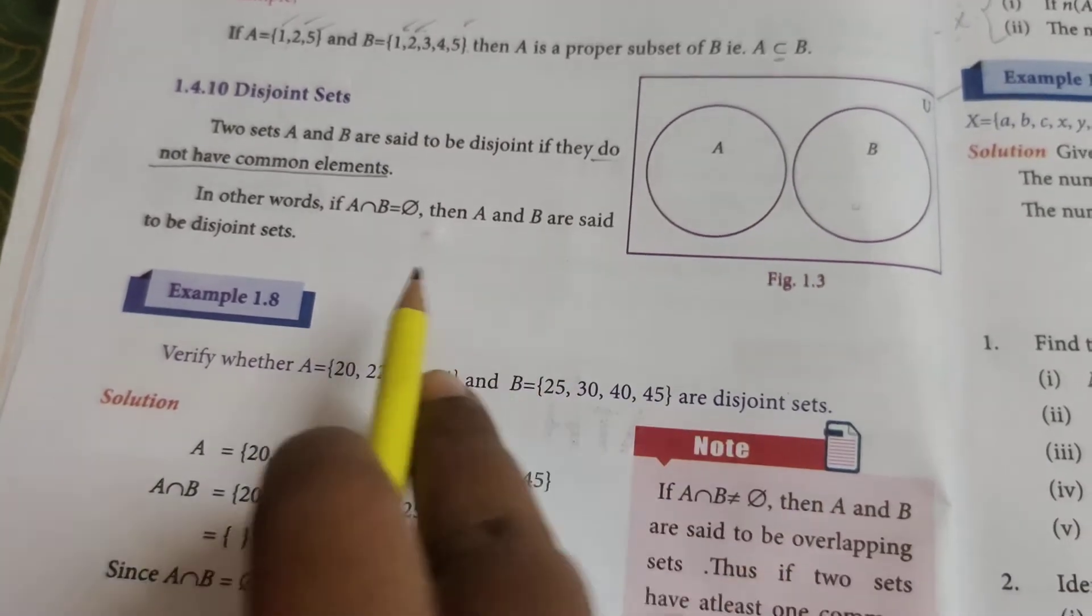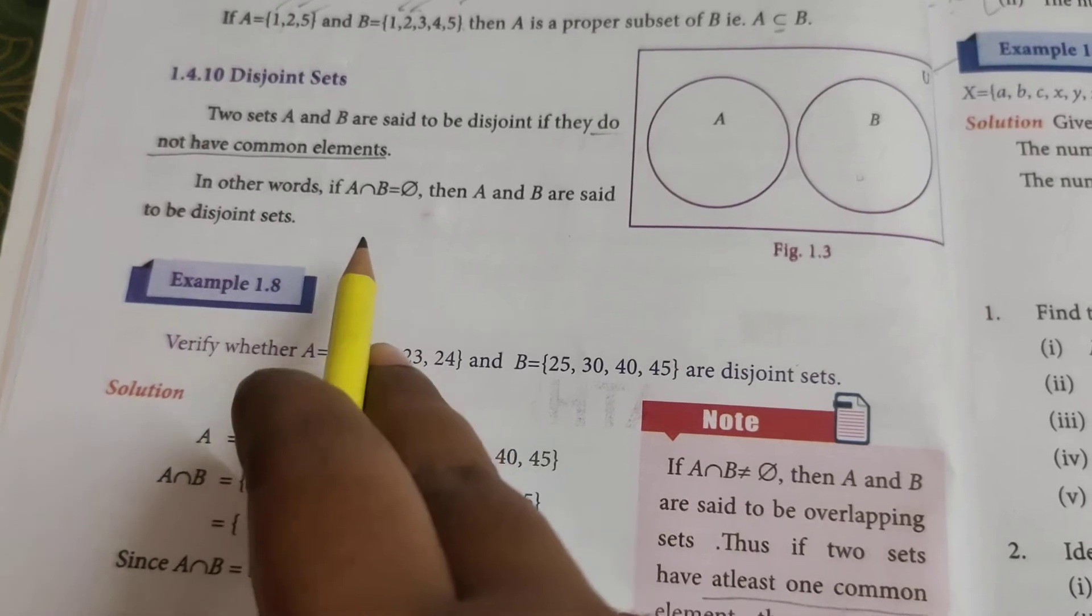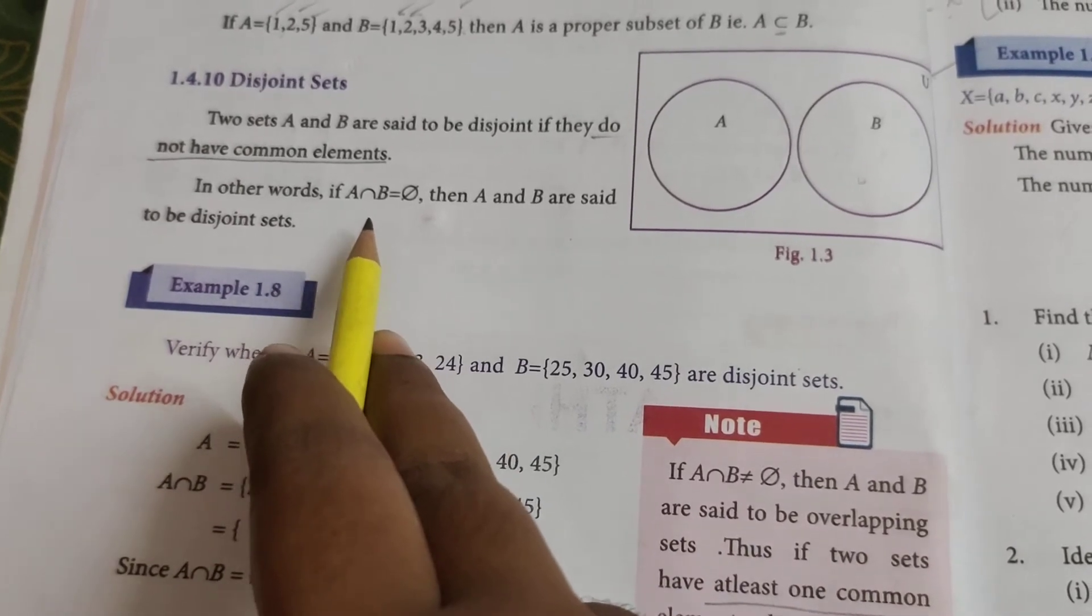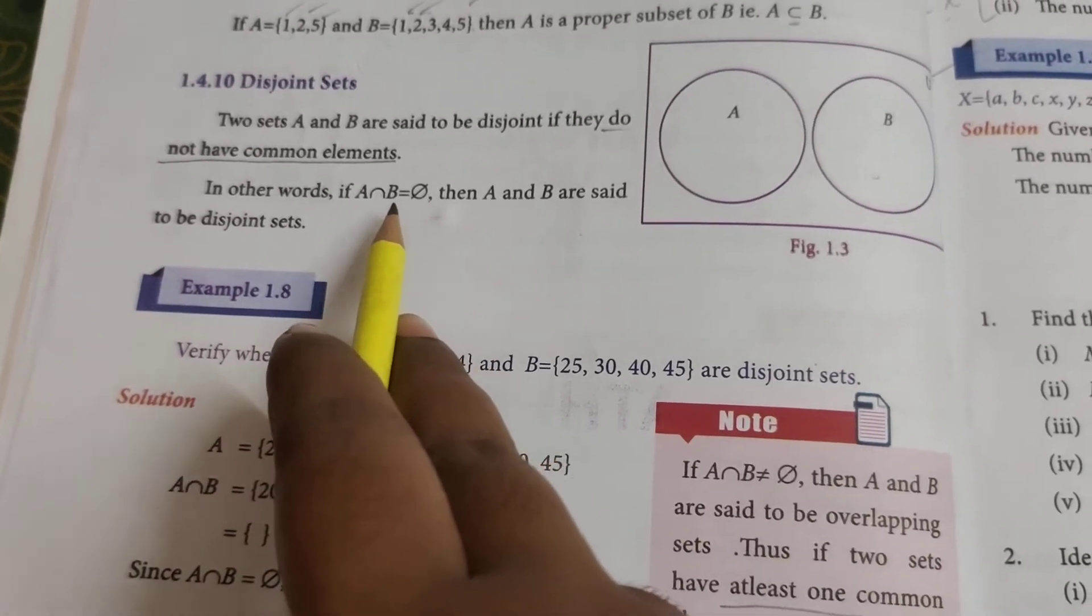If two sets like this, these two sets are called as disjoint sets. In other words, if A intersection B equals Φ, that means there is no common element, then A and B are said to be disjoint sets.